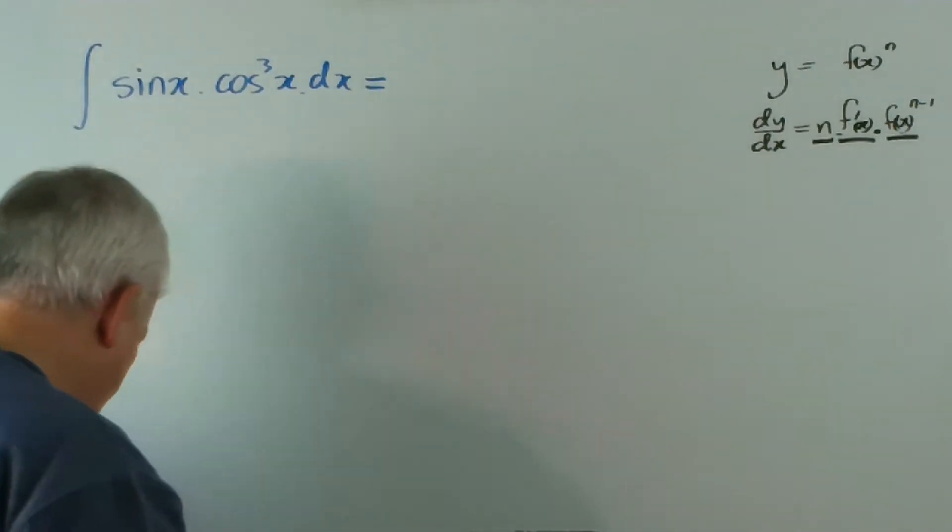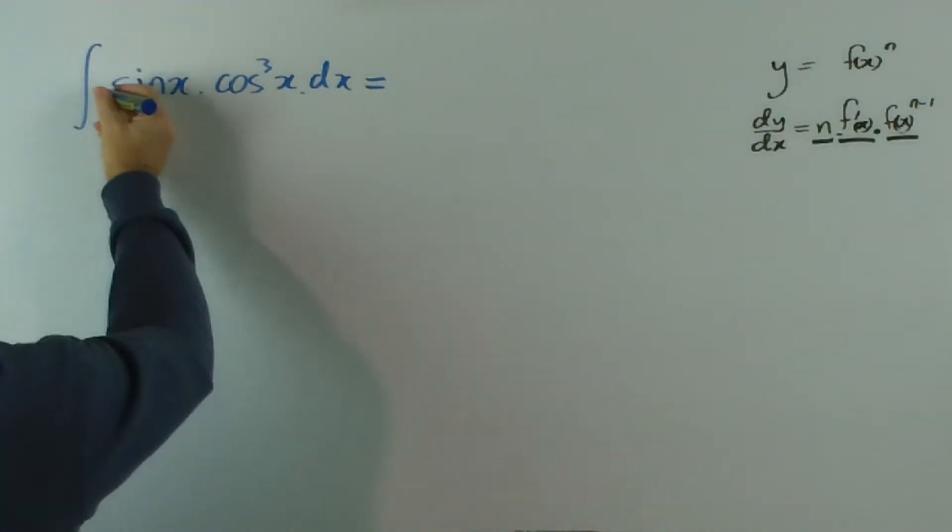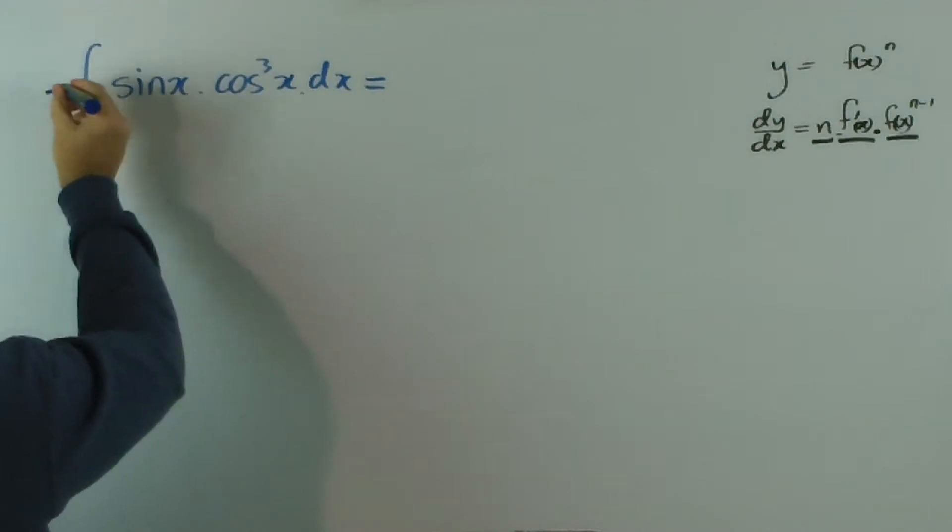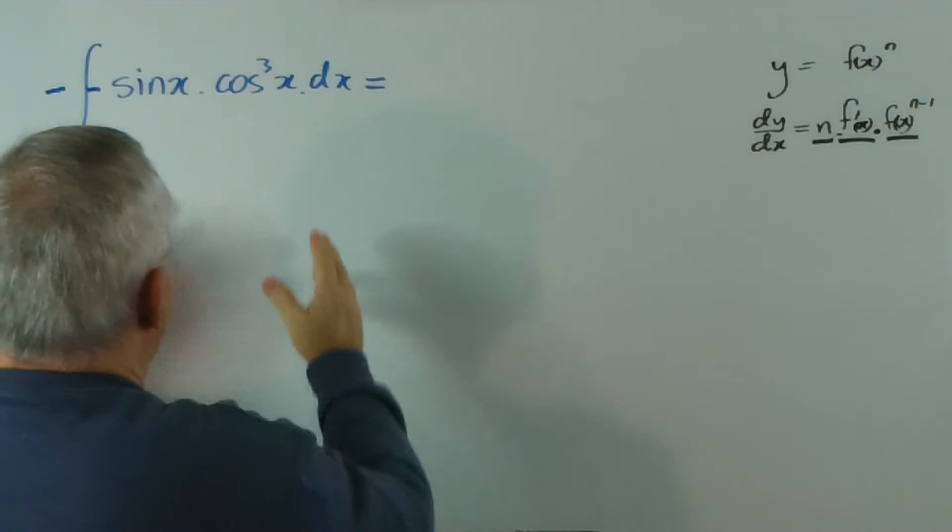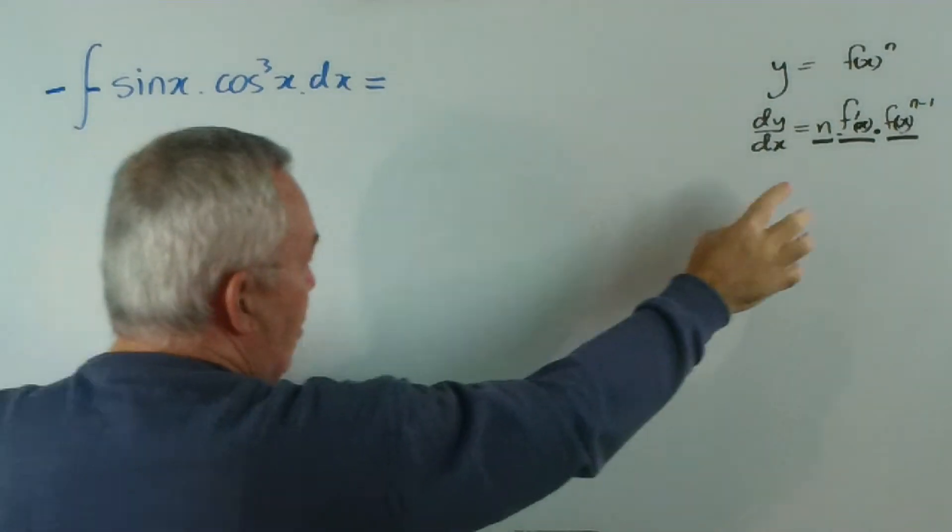Now, the derivative of cosine is actually a negative sine. So I'm going to put a negative sign here and one out the front as well to compensate, because I'm trying to get the integral itself to match this pattern.